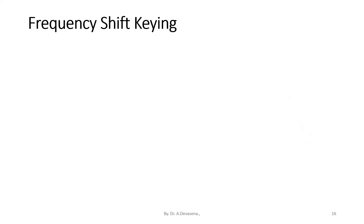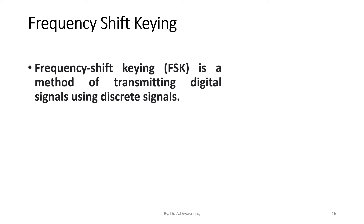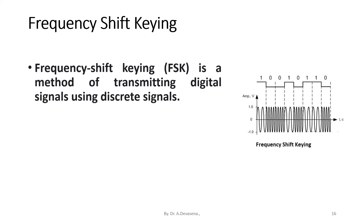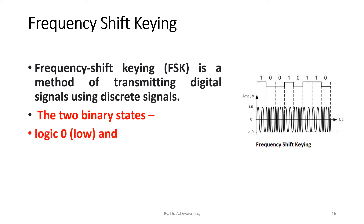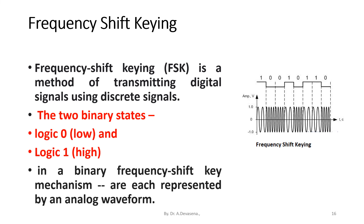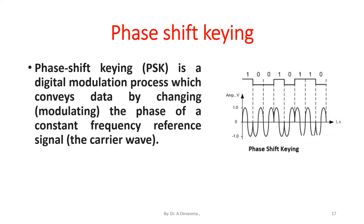Frequency shift keying (FSK) is a method of transmitting digital signals using discrete signals. Here is a representation of FSK. The two binary states in this diagram represent logic 0 (low) and logic 1 (high). In a binary frequency shift keying mechanism, each state is represented by an analog waveform.